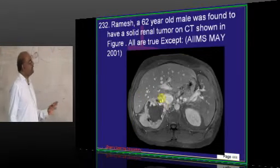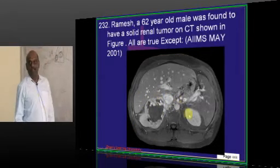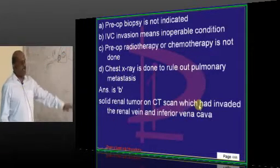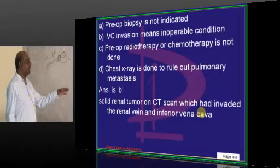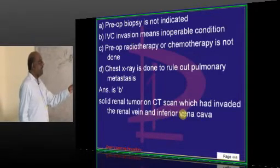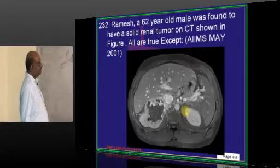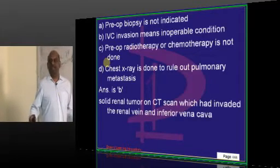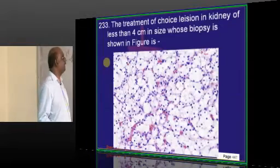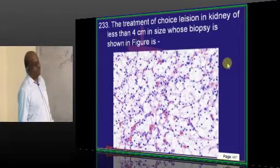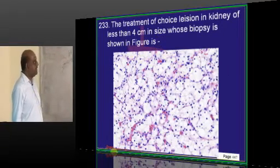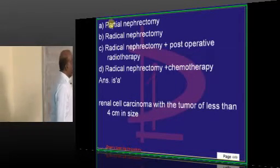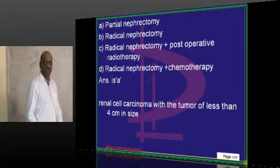Ramesh is a 62-year-old. He has got a solid renal carcinoma on the CT. What is not true about it? Whenever renal tumor is there, it has invaded the renal vein and impaired vena cava. And if the IVC invasion is there, it does not always mean an inoperable condition. That is the point of gist. Then, in the kidney, the lesion is 4 centimeters, less than 4 centimeters and biopsy is showing clear cell carcinoma, renal. What is the treatment? It is typically the partial nephrectomy, when the size is less than 4 centimeters.